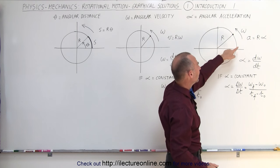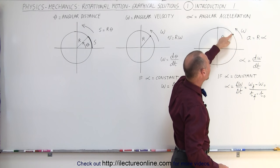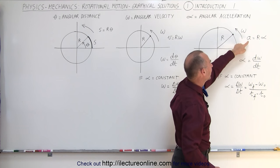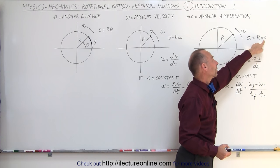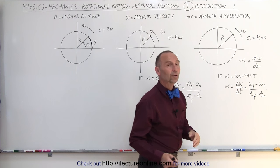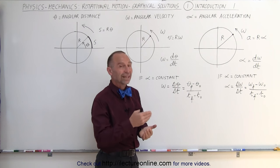Again, we can relate the tangential acceleration, the acceleration of a point on the rim of the circle. If this is accelerating, the acceleration in a linear fashion is equal to the radius r times the angular acceleration. Note that the units of angular acceleration are radians per second squared.